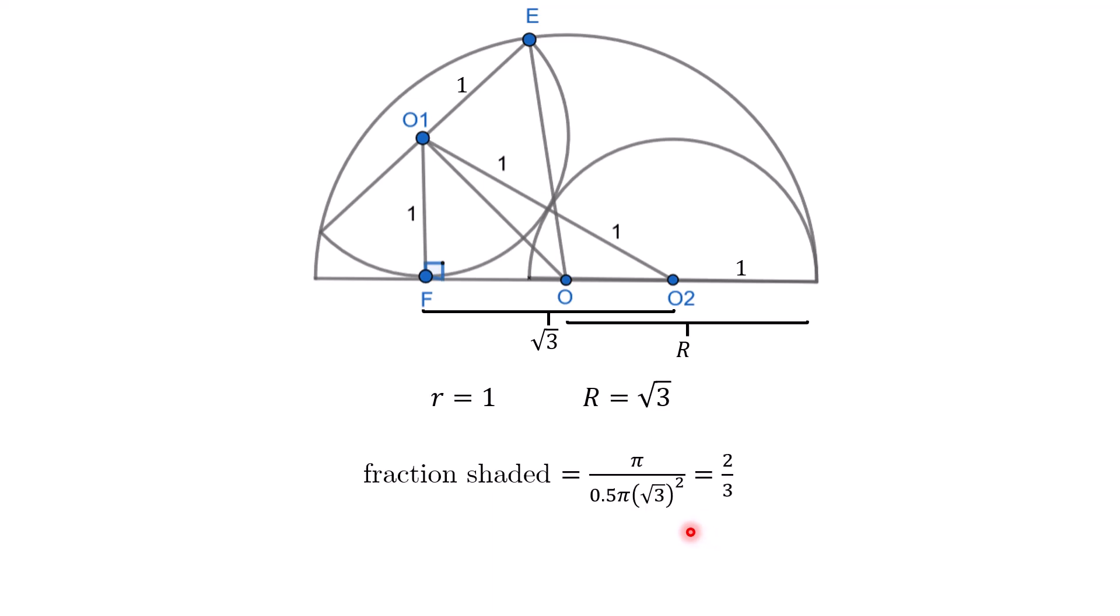And that's all. Once we have small r is 1, capital R is √3, then we can quickly calculate that the fraction shaded is π for the two semicircle areas. And then for the larger semicircle is half of π(√3)². So the answer is two-thirds.